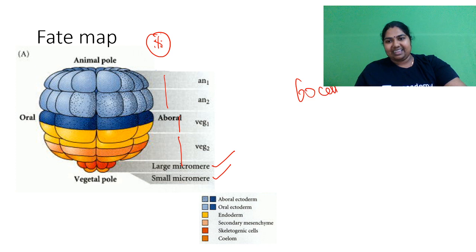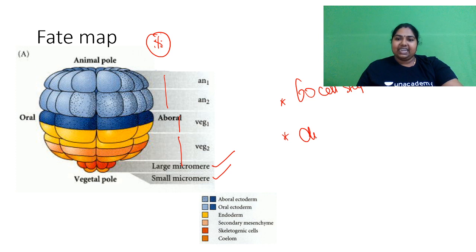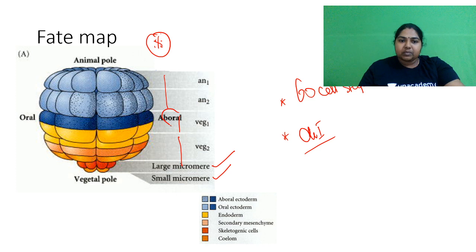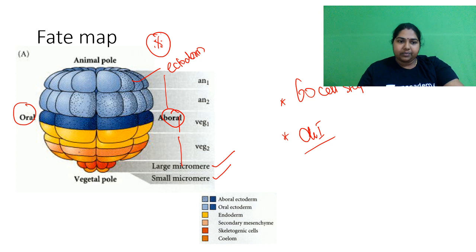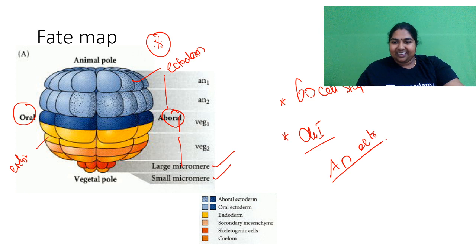This is called the fate map of your sea urchin. It has two animal regions and then vegetal region 1 and vegetal region 2, containing large micromeres and small micromeres. They achieved this mapping at your 60-cell stage using a fluorescent dye — DI1 — to label the cells. These cells were developing into their respective regions. Here you have the aboral and the oral region, and the animal region is going to become ectoderm. The yellow region is going to become endoderm.